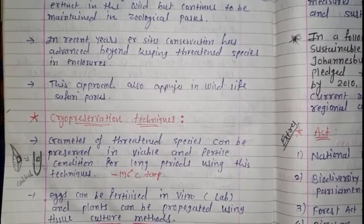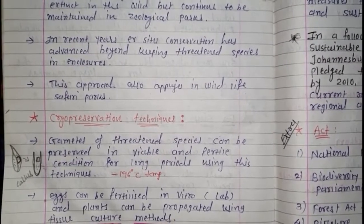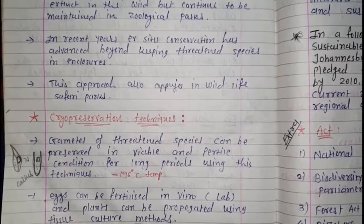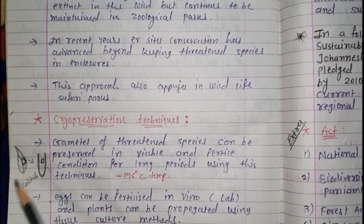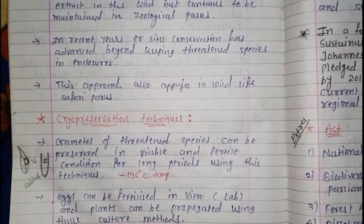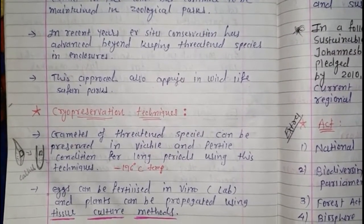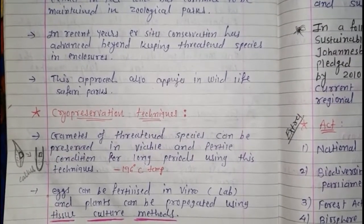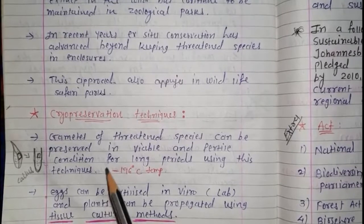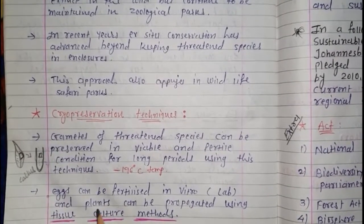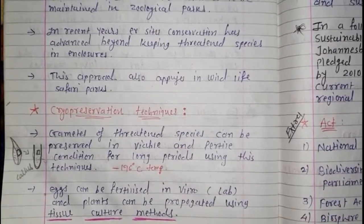Why are we discussing plant tissue culture here? Because if we freeze and preserve even a small part of a plant, we can grow a complete plant from it in the future — just as we discussed growing a plant from a leaf part. So even a preserved plant part can be used to regenerate the entire plant. That is why plant tissue culture is part of ex-situ conservation. We discussed two techniques: cryopreservation and plant tissue culture.